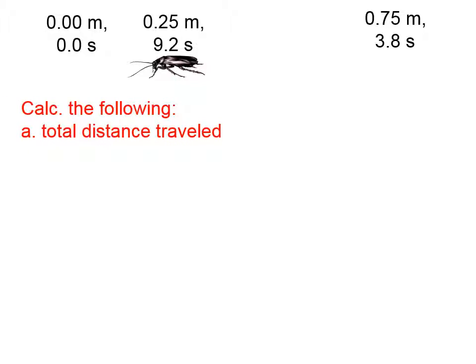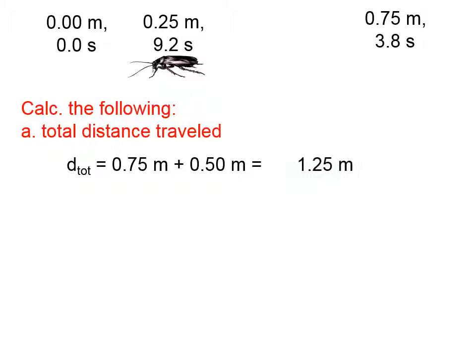Let's calculate the total distance traveled. The cockroach starts at the origin, travels 0.75 meters, and then travels back to the 0.25m position, which is an additional half meter. So the total distance that he's traveled is 1.25 meters.